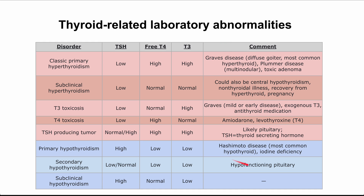In the right column, we have some notes that I'll talk through as we go along. First is classic primary hyperthyroidism, which comes in three forms. It's helpful to differentiate them based on gross pathology. First is Graves' disease — a diffuse enlargement of the thyroid, presenting with a diffuse goiter, and it's the most common type of hyperthyroidism in the United States. Next is Plummer disease, also an enlargement of the thyroid, but it's multi-nodular — not diffuse and not smooth.